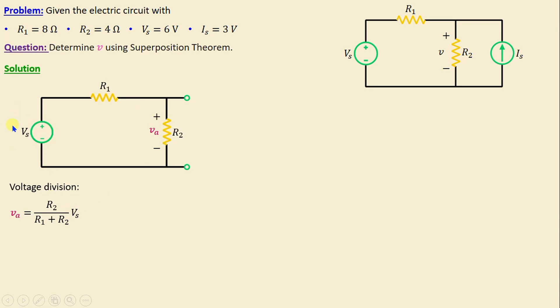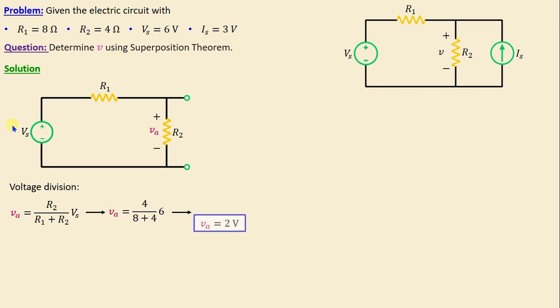That means VA is equal to R2 over (R1 plus R2) times VS. If we replace the resistors and the voltage with their numerical values, we obtain VA is equal to 2 volts.